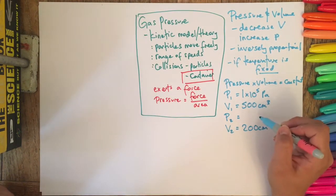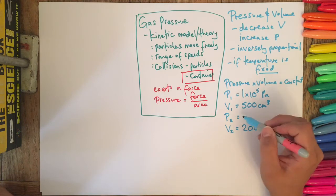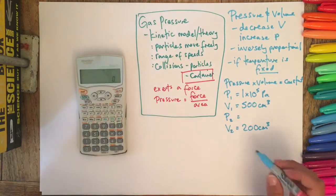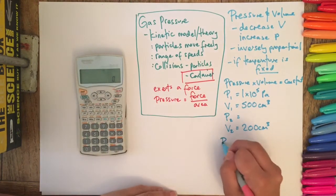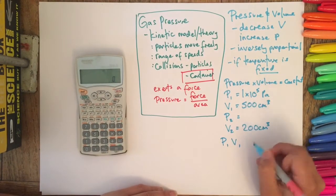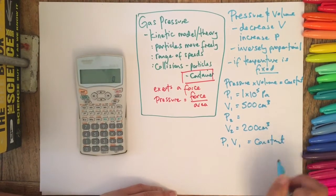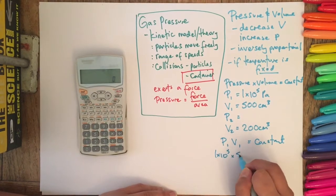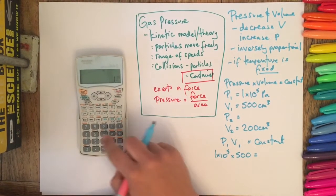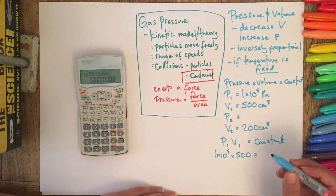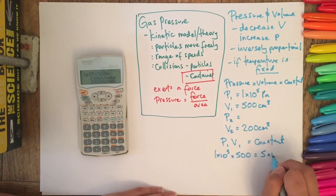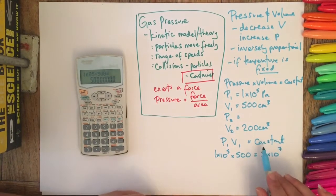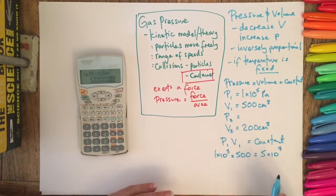Well we're reducing the volume so we would assume that the pressure is going to increase, but we can actually calculate this. So if we do P1 V1, so pressure times volume is equal to a constant. So our pressure is 1 times 10 to the 5 times 500, so 1 times 10 to the 5 times 500 is 5 times 10 to the 7. Don't worry about units for now, we're just looking at it as a constant so it doesn't really matter for this what our units are.